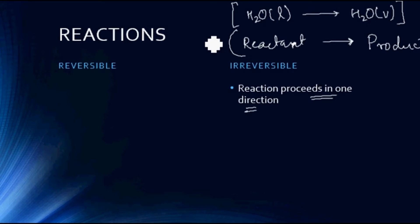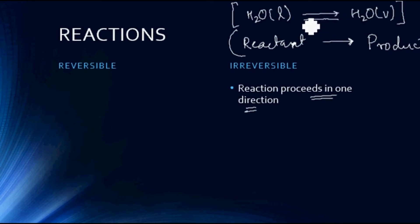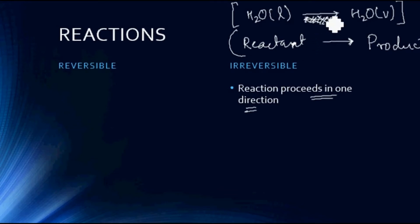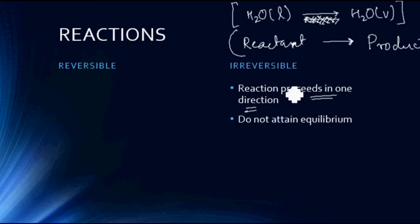When I talk about an irreversible reaction, I mean that the chemical or physical process proceeds only in one direction — from the left hand side to the right hand side of the equation. Under the same experimental conditions, the product does not change back into the reactant. If this backward change does not take place, we say that the reaction is an irreversible reaction. These reactions do not attain equilibrium.